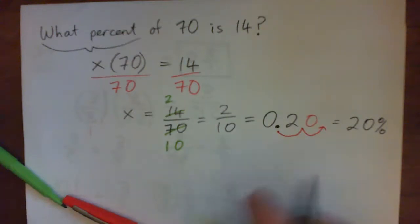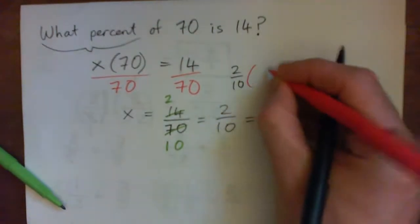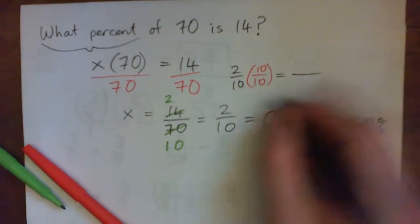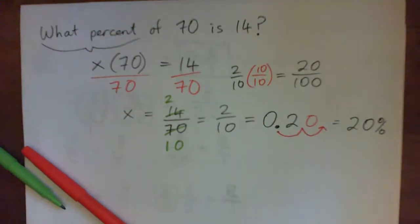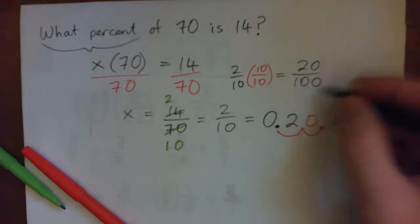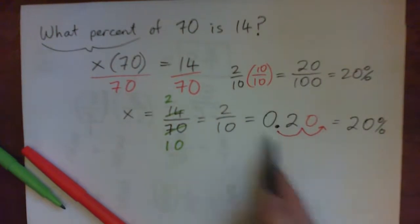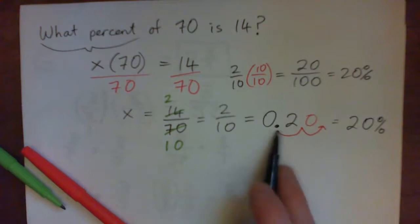Because 2 over 10, if you take 2 over 10 and multiply it by 10 over 10, just for fun, you'll get 10 times 10 is 100, 2 times 10 is 20. You'll get 20 over 100, which is 20 per 100, which is 20%. So that's the equivalent of moving the decimal point over two spots, putting it over 100.